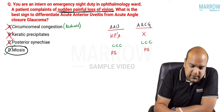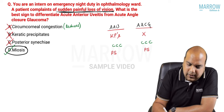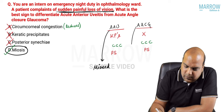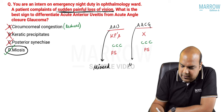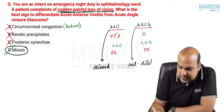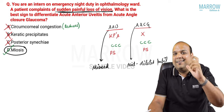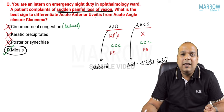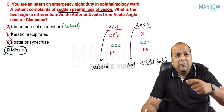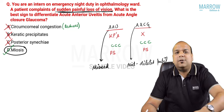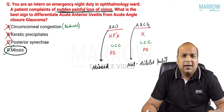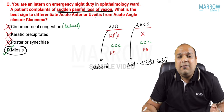In acute anterior uveitis the pupil is miosed, whereas in acute angle closure glaucoma we find a mid-dilated pupil. So when you just have a torch in your hand, the only thing you can see and measure is the size of the pupil. That is why this sign lets you diagnose whether it is anterior uveitis or angle closure glaucoma.